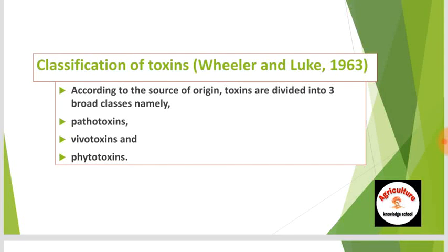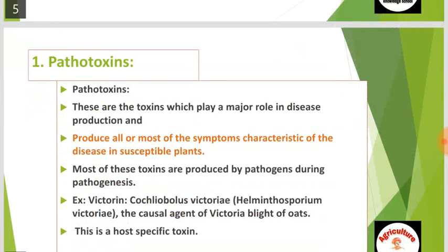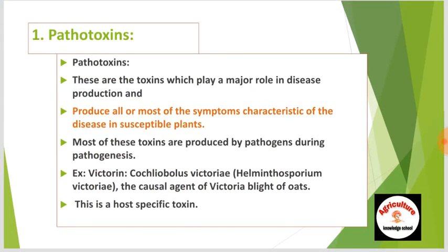According to source of origin, toxins are divided into three broad classes: pathotoxins, vivotoxins, and phytotoxins. Pathotoxins are toxins which play a major role in disease production and produce all or most of the symptoms characteristic of the disease in susceptible plants. Most are produced by pathogens during pathogenesis. An example is victorin, produced by Cochliobolus victoriae — the causal agent of Victoria blight — and it is a host-specific toxin.